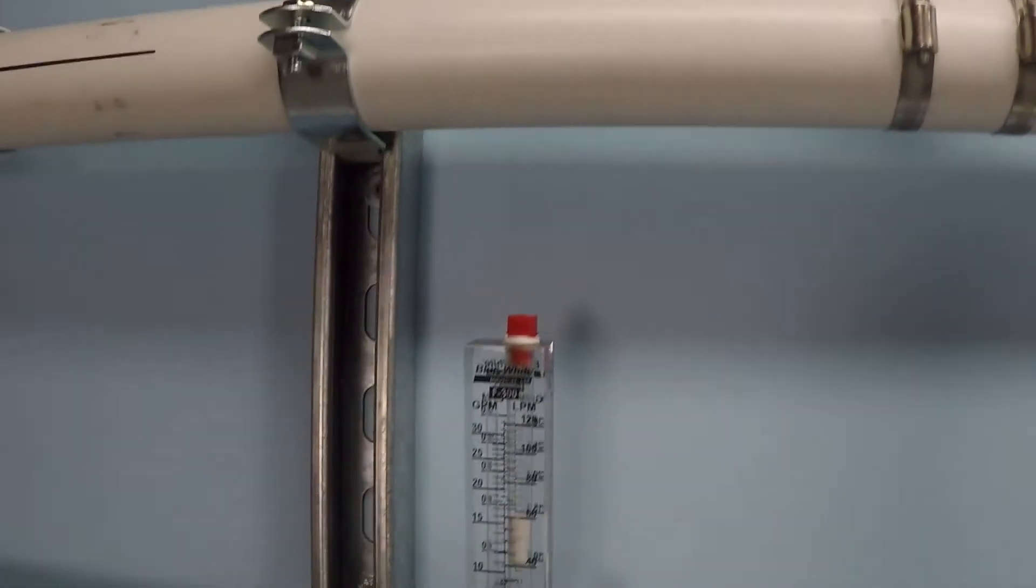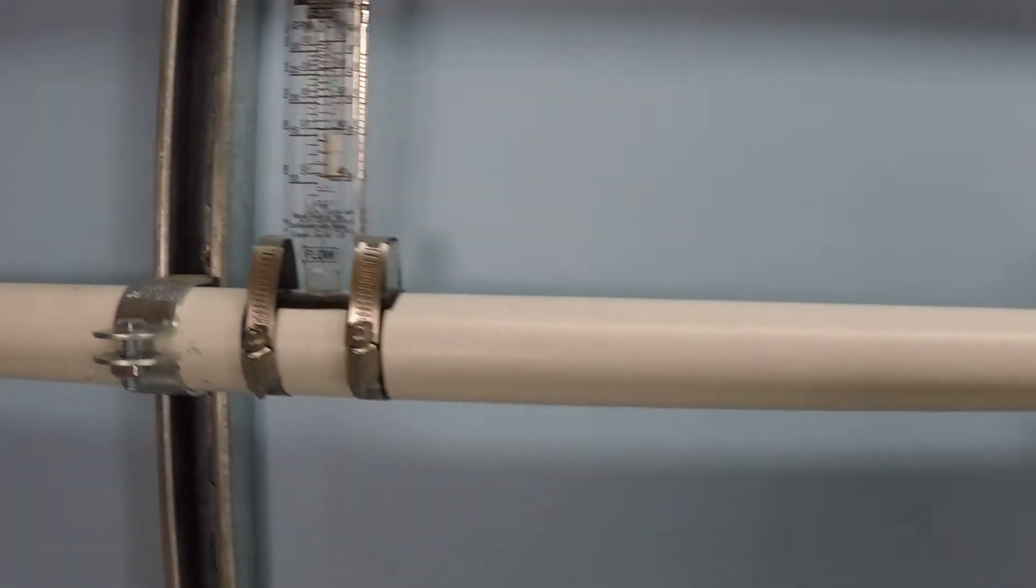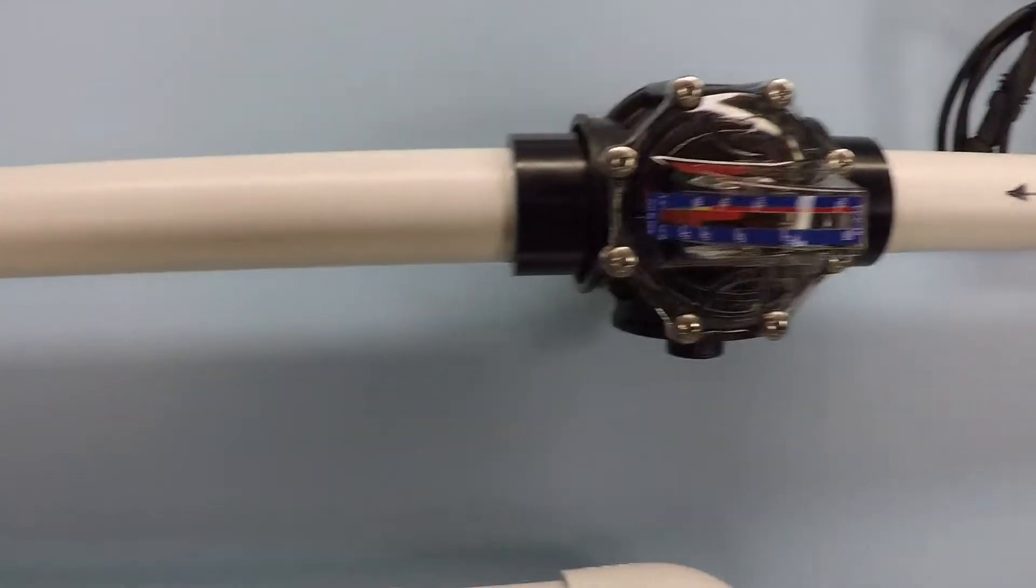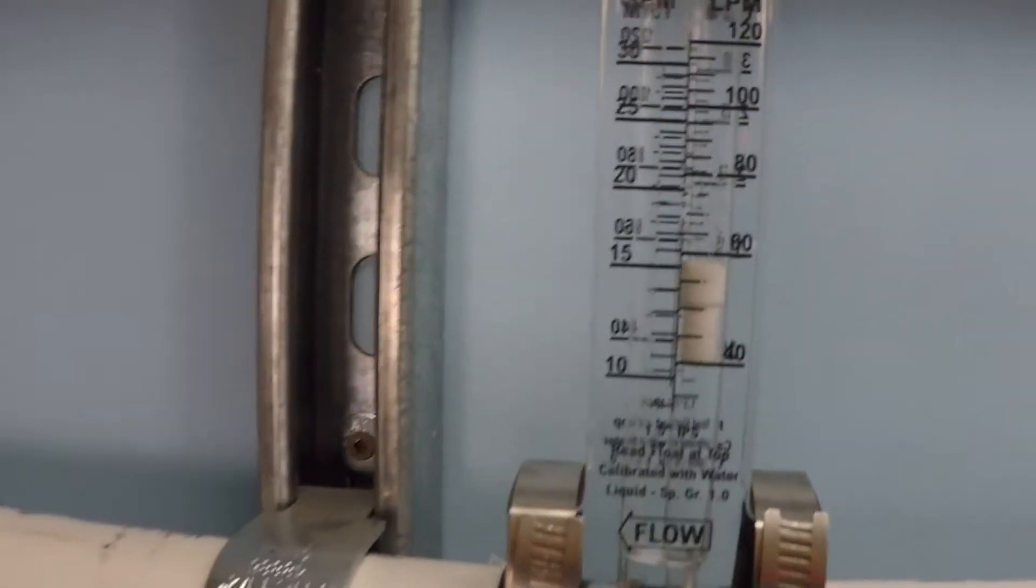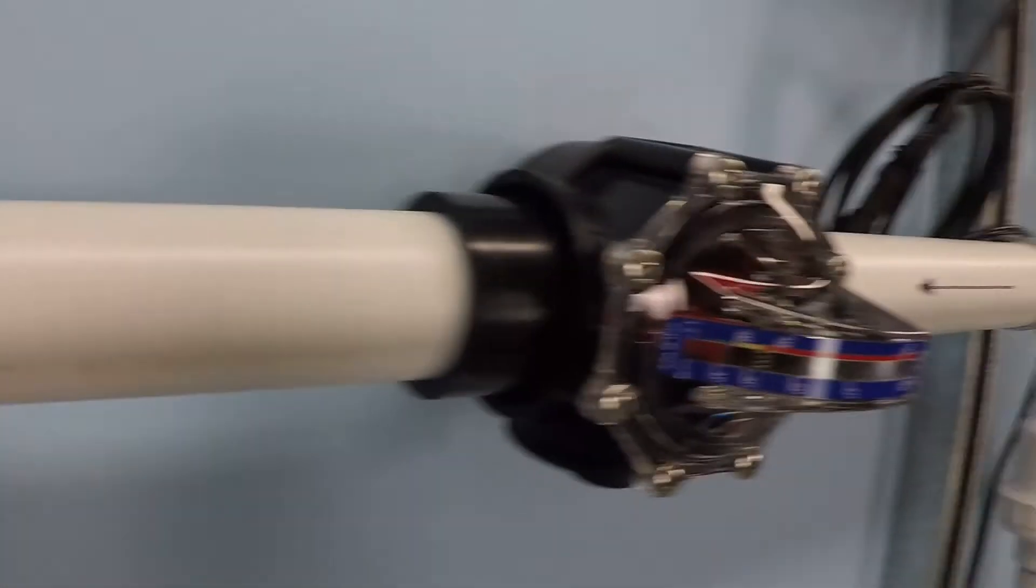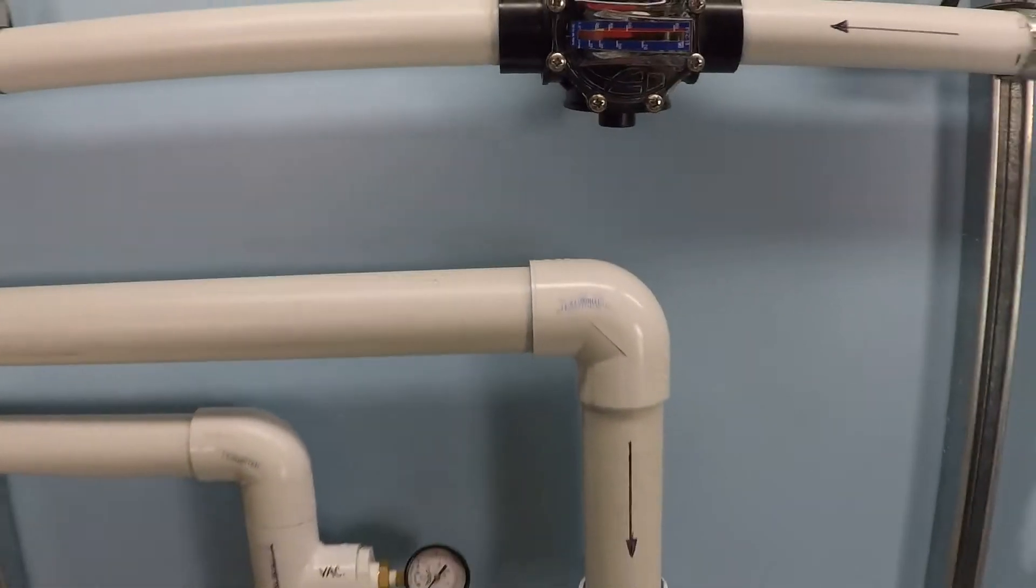These are all examples of flow meters here. Now typically what you would do is use something like this. They're just an analog device and you would read the instrumentation range, the scale, the flow rate from the face of the meter itself.